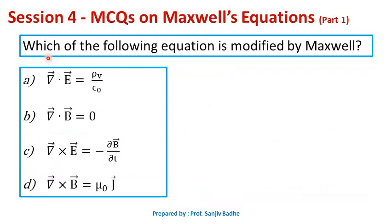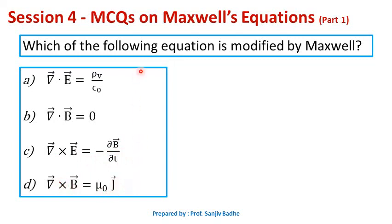Next one: which of the following equations is modified by Maxwell? The options are: divergence of E bar equals rho_V by epsilon naught (first equation); divergence of B bar equals 0 (second equation); curl of E bar equals minus del B bar by del t (third equation); or curl of B bar equals mu naught J bar (fourth equation). Which one was modified by Maxwell?